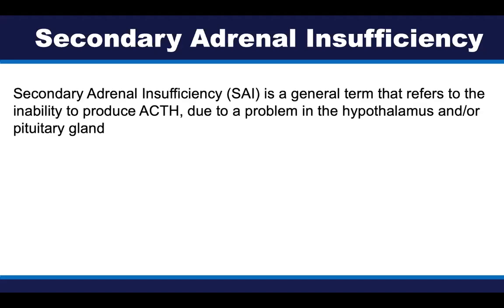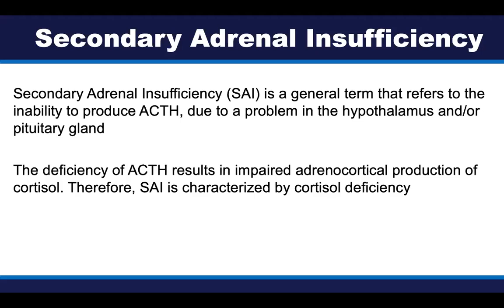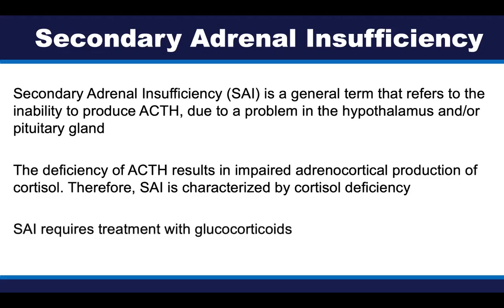To review: secondary adrenal insufficiency is a general term referring to the inability to produce ACTH due to a problem with the hypothalamus or pituitary. This deficiency in ACTH results in impaired production of cortisol, so secondary adrenal insufficiency is characterized by an isolated cortisol deficiency. As a result, all patients with secondary adrenal insufficiency require treatment with glucocorticoids. This concludes part three of the video series — you can now move on to part four. Thank you.